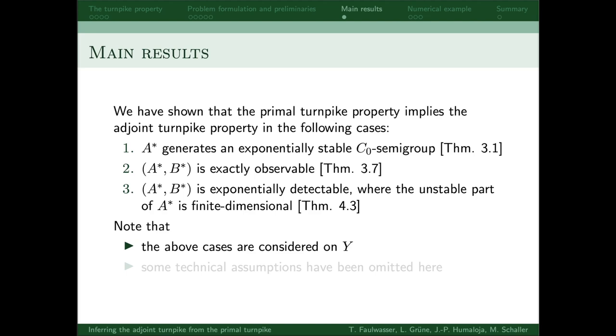So in particular, the adjoint of A has to generate a strongly continuous semi-group on Y. Also note that these cases aren't quite as simple as presented here, as there are some additional technical assumptions involved to make the proofs work. You can check this from the article if you're interested.